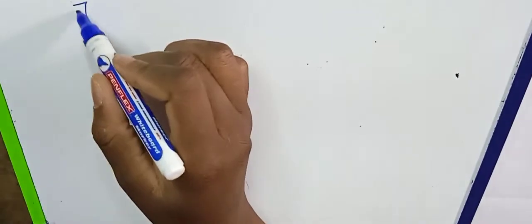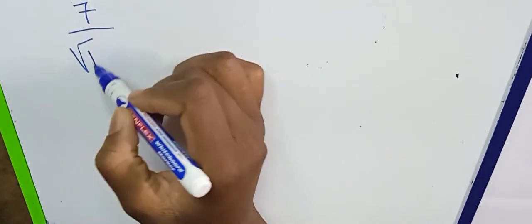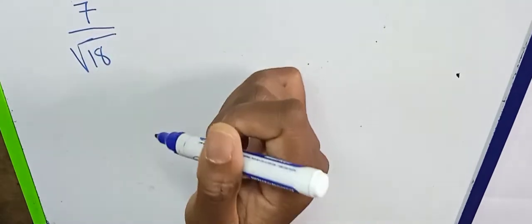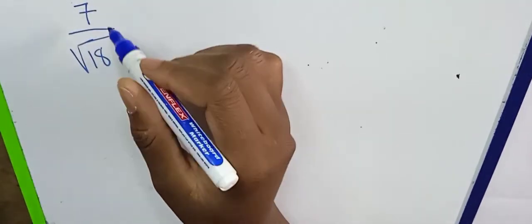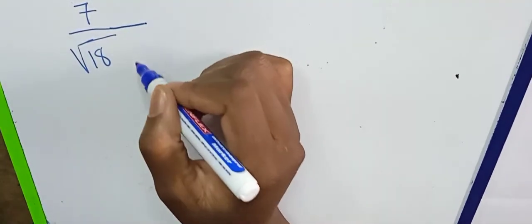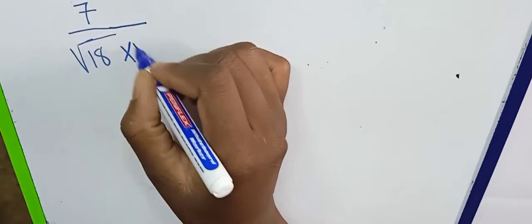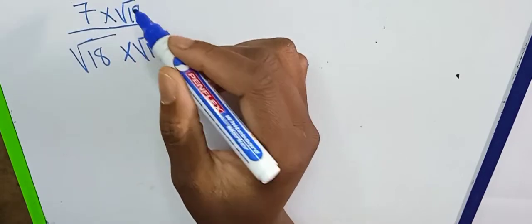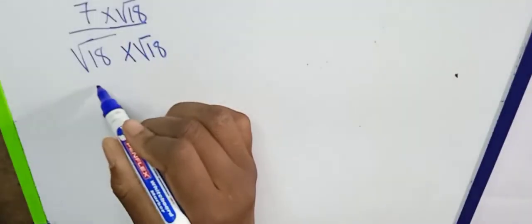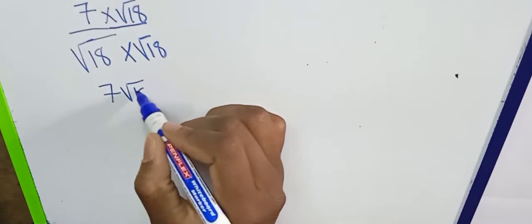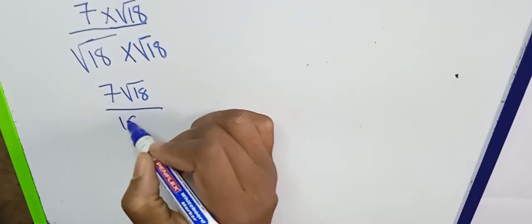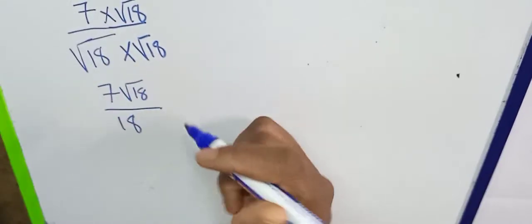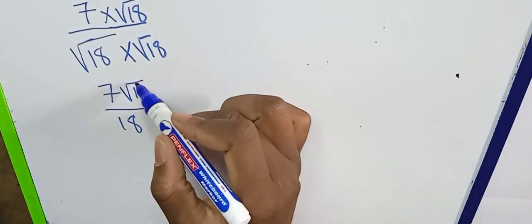That was our first example. Let's look at the second example: seven over the square root of 18. To simplify this, we also multiply by root 18 over root 18. What we did on the denominator we must also do on the numerator, giving us seven root 18 over 18, because root 18 times root 18 is just 18.